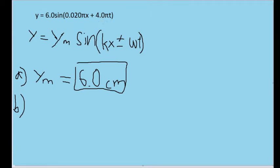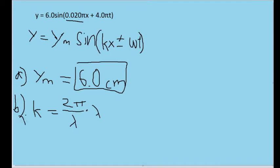We can also get the angular frequency, which is going to be the constant associated with the t on the right side of the phase. We have a formula for the angular wave number k, given by k equals 2 pi divided by the wavelength. So this gives us a formula for the wavelength lambda that includes k — there's a relationship between the angular wave number and the wavelength. Let's rewrite this formula: multiplying both sides by the wavelength and dividing both sides by k gives us a formula for the wavelength, which is 2 pi divided by the angular wave number k.